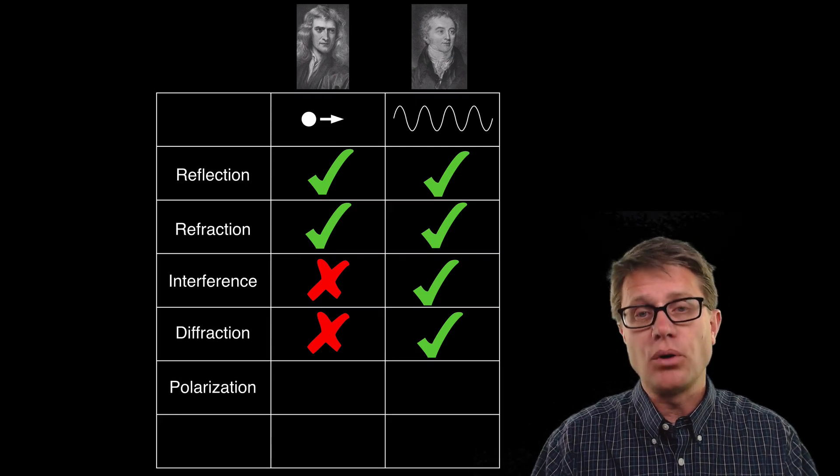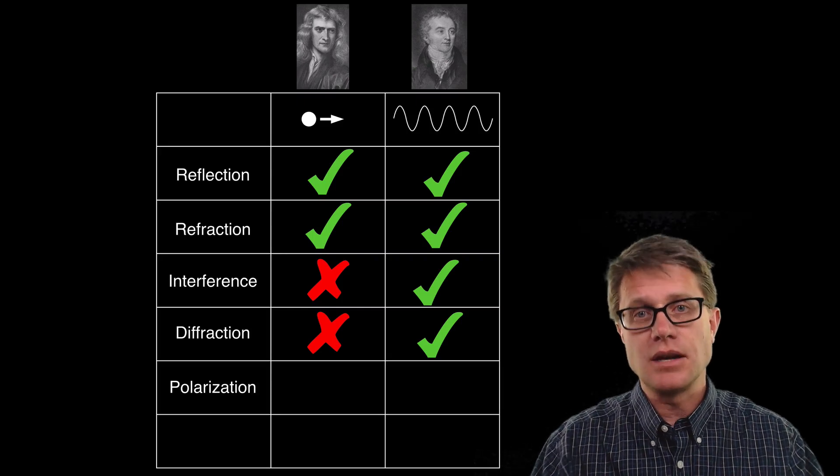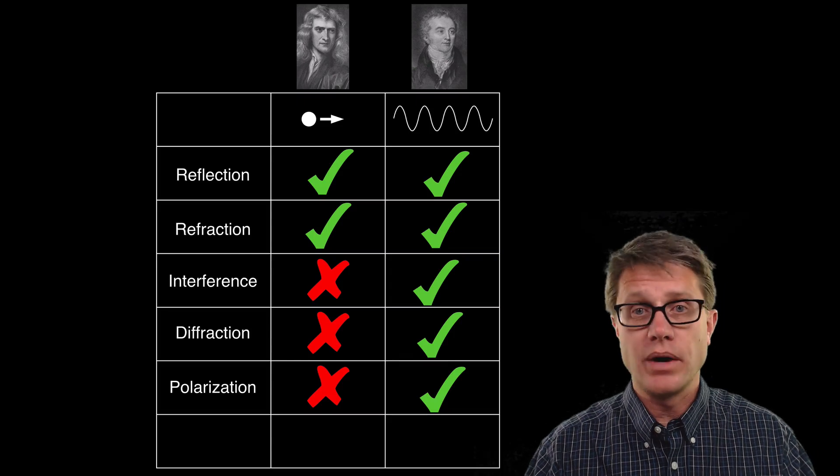What about, can they be polarized? In other words when they are traveling in one dimension, can we use small slits to just limit the amount that go through? Particle no. And we would say yes for waves. So waves are looking great.